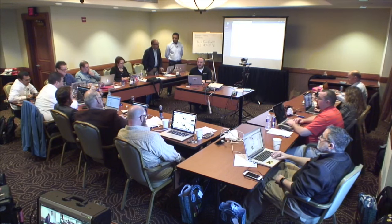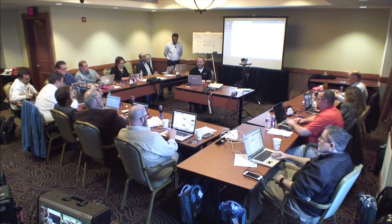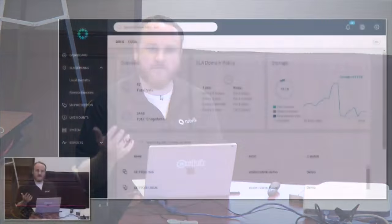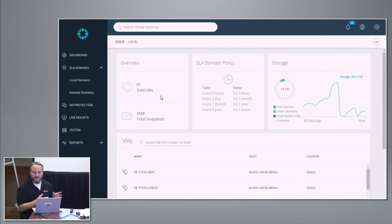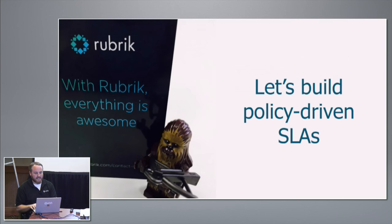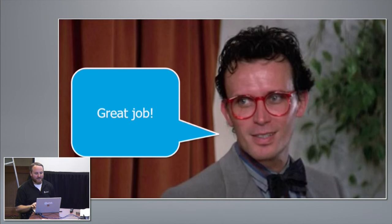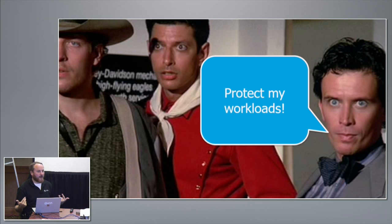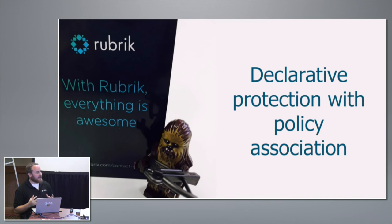So we've seen the SLA domains — gold, silver, bronze. Now we have SLAs where we've taken the CEO's requirements and put them into SLA domain policies. But the SLA doesn't do anything until it's associated with a workload, so we need to protect those workloads. We're going to do declarative protection using the SLAs.